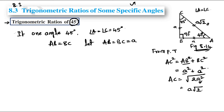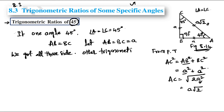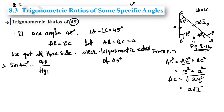Now that we have all three sides, we find the trigonometric ratios of 45 degrees. Taking angle A as 45 degrees: sine 45° equals opposite over hypotenuse, which is a divided by a√2. The 'a' cancels and we get 1/√2. For cos 45°, adjacent over hypotenuse equals a divided by a√2, which also gives 1/√2.